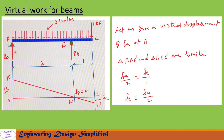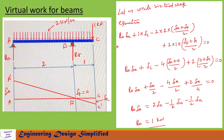Now let us find reaction at A. To do so, let us give a virtual displacement of delta-A at A. The beam assumes the position A-prime, B, C-prime. Displacement at A is delta-A, at B delta-B equals zero, and at C it is delta-C. We again have two similar triangles — B-A-A-prime and B-C-C-prime — giving us delta-A over two equals delta-C over one, so delta-C equals delta-A over two.